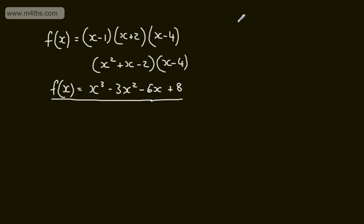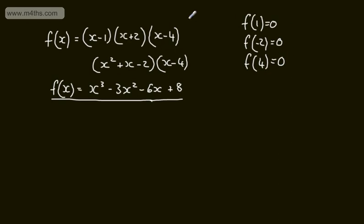Looking at this, we can say f(1) equals 0, f(minus 2) equals 0, and f(4) equals 0. If x minus 1 is a factor, then f(1) equals 0. We can use this to find a linear factor of a cubic equation, and then try to write it as a product of three linear factors, or as a linear factor multiplied by a quadratic — which is always achievable even if three distinct linear factors aren't possible.